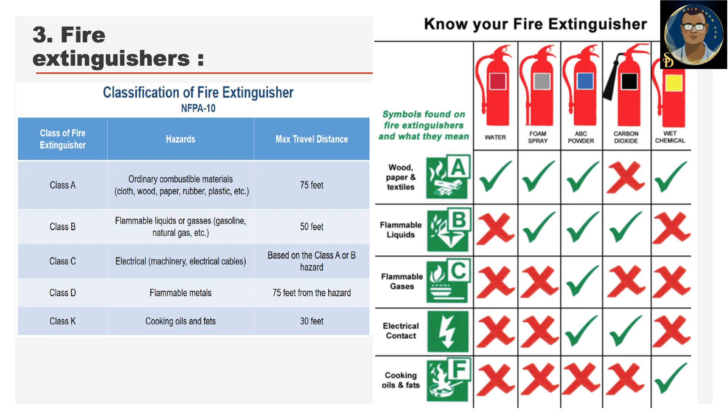Fire extinguisher classifications: Class A hazards are ordinary combustible materials — cloth, wood, paper, rubber, plastic — with a maximum travel distance of 75 feet. Class B is flammable liquids or gases such as gasoline and natural gas, with a travel distance of 50 feet. Class C is electrical or machinery fires based on Class A and B hazards. Class D is for flammable metals, 75 feet from the hazard. Class K is cooking oils and fats, which can be sprayed from 30 feet away.